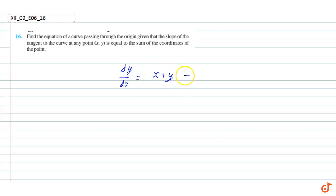So if we take y from right side to left side, then this equation will be dy/dx minus y is equal to x. This equation is a first order differential equation, and here P is equal to minus 1 and Q is equal to x.